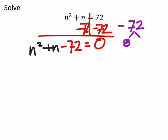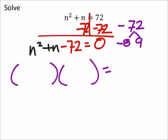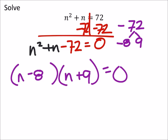I'm going to use 8 and 9, specifically negative 8 and 9. And using the rule, just for time's sake, this is what we would get: n minus 8 and n plus 9.